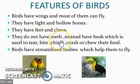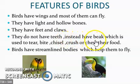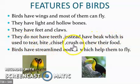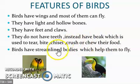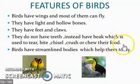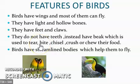They do not have teeth — unke daat nahin hote hain. To phir wo kaise khaate hain? Instead, they have a beak, which is used to tear, bite, chisel, crush, or chew their food. To unke teeth nahin hote, unke paas beak hoti hai. Jo beak hai, wo iske liye use ki jaati hai — tearing, biting, chiseling, crushing, or chewing their food. Jaise maan lo flesh khaate hain, to usko cheer phaad karke khaane ke liye.